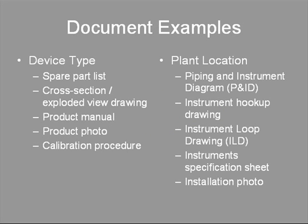Device type documents from the device manufacturer include spare part list, cross-section or exploded view drawing, product manual, product photo, and calibration procedure. Device type documents are the same regardless of which plant the device is used in. Plant location documents from the project engineering company include piping and instrumentation diagram (P&ID), instrument hookup drawing, instrument loop drawing, instrument specification sheet, and installation photo. Plant location documents are the same regardless of which type of device is used.